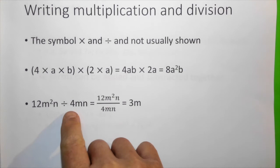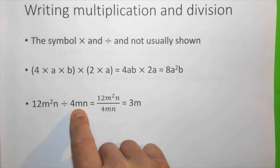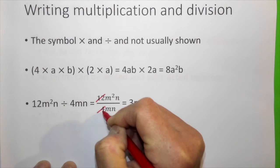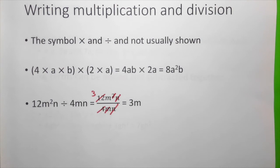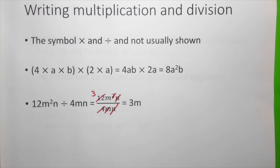What about division? 12m squared n divided by 4mn. Rearrange and rewrite it as a fraction. We can eliminate and simplify it. 12 divided by 4, that's 3. m squared divided by m, that is m only. And n can be eliminated. Therefore, 12m squared n divided by 4mn is actually 3m.